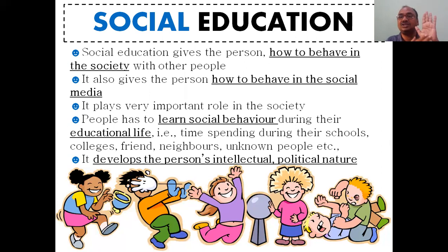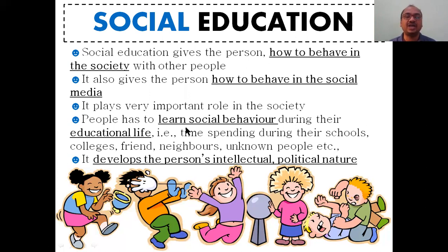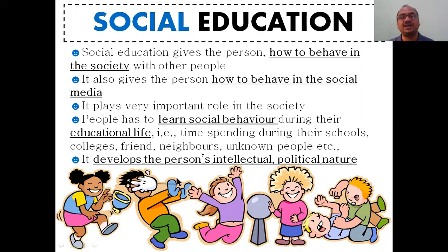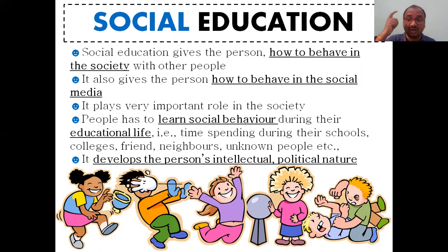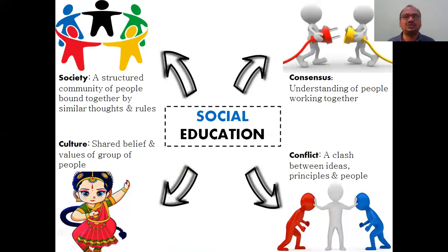By seeing your marks they can tell your educational level, but for social behavior they have to contact the college. That's why social behavior plays a very important role. People must learn social behavior during their educational life — the time spent in schools, colleges, with friends, neighbors, and unknown people — including how to behave with strangers.